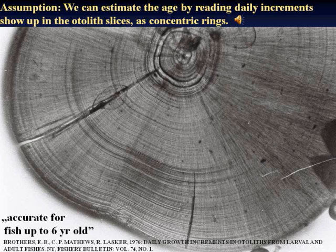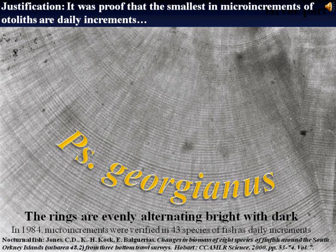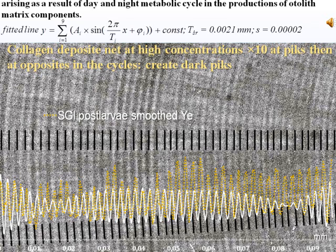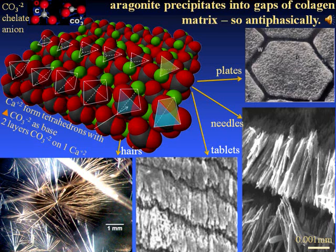Assumption: We can estimate the age by reading daily increments, which show up in otolith slices as concentric rings. Otolith slices, after polishing the surface, show up daily increments as concentric rings. Justification: It was proved that the smallest micro-increments of otoliths are daily increments, arising as a result of the day-and-night metabolic cycle in the production of otolith matrix components — collagen making the space matrix of the otolith, and aragonite filling the gaps in the collagen matrix space.